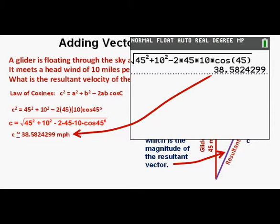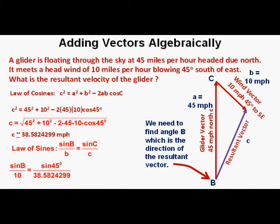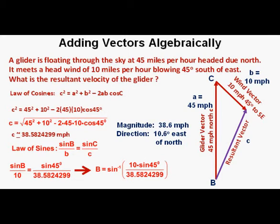Don't round until you're done — we'll use 38.5824299 to find the direction. Using the law of sines: sine of angle B over 10 equals sine of 45 degrees over 38.5824299. Multiplying by 10 and taking the inverse sine, we get angle B equals the inverse sine of 10 times sine of 45 degrees over 38.5824299. Angle B is about 10.6 degrees east of north. So this vector has a magnitude of 38.6 miles per hour in a direction of 10.6 degrees east of north.